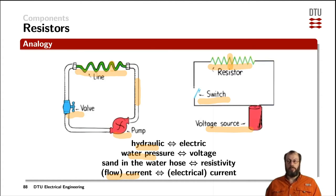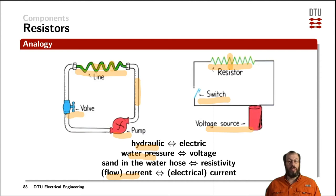What about the material? The material can be represented in the hydraulic analogy like sand inside the water hose. The more sand you have inside, the more the water molecules collide with the sand, and the harder it is to press the water molecules through — which is equivalent to pressing charges through a resistive material. So the more resistivity you have, the harder it is to press the electrons through the resistor. In this analogy, the water molecules are equivalent to the charges in the electrical model.